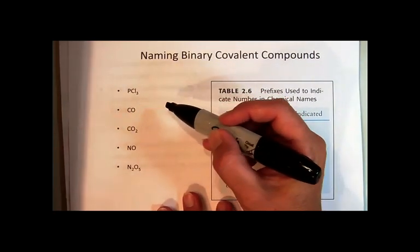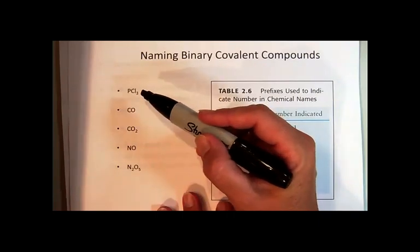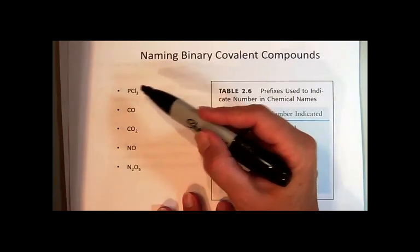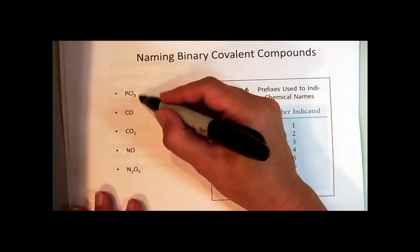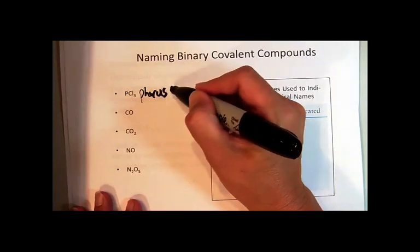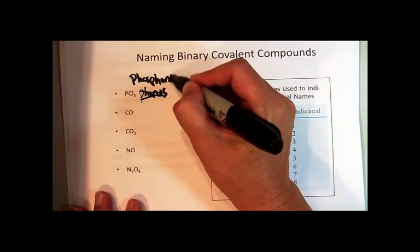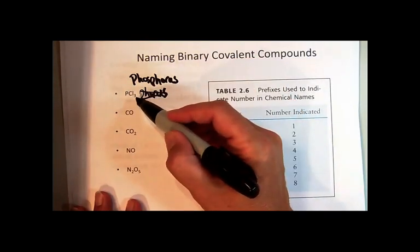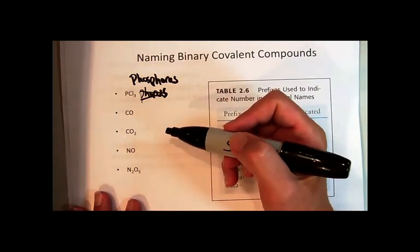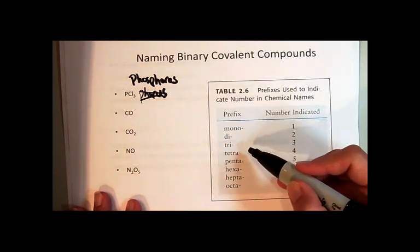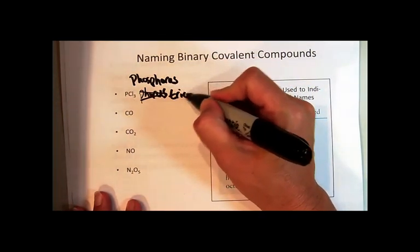So in this case, this particular compound, I recognize it as a covalent, nonmetal, nonmetal. I name it. The first element is always just going to get the elemental name phosphorus. And then the second element is just going to be the elemental name with the IDE suffix again, but this time I need to use a prefix to identify the number. So it's going to be phosphorus trichloride.